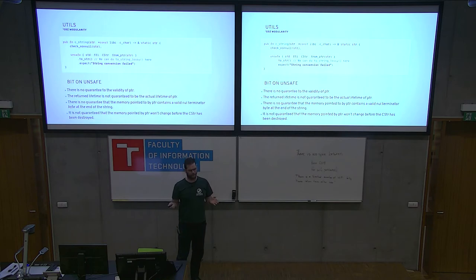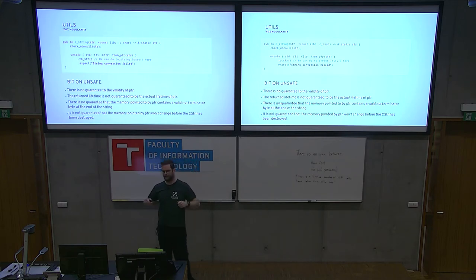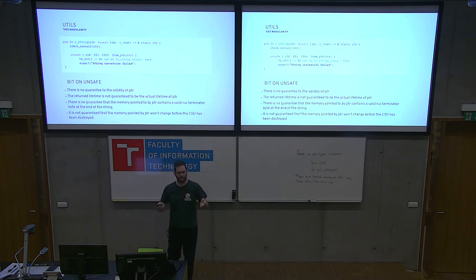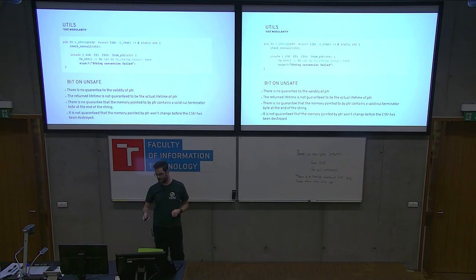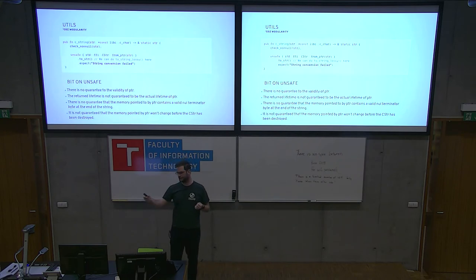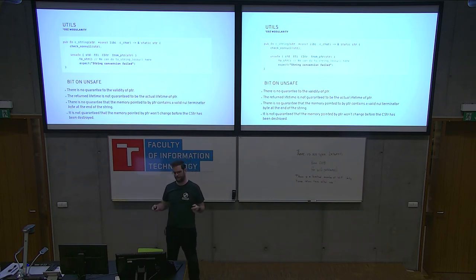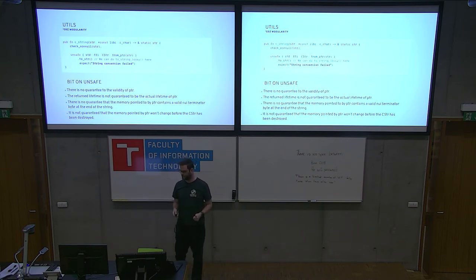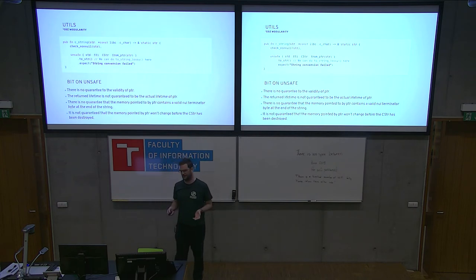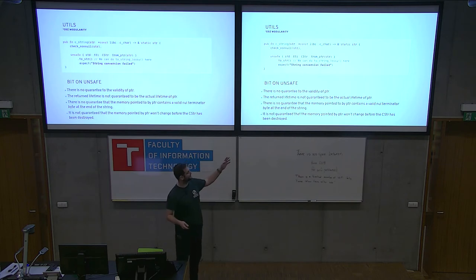You need unsafe when interfacing with another language, but what's really good is that whenever there's a reason to use unsafe, there's a list of things the compiler cannot do for you that you need to make sure of. For CStr::from_ptr: there's no guarantee of the validity of the pointer — well, we assume someone gave us a valid pointer since it's our code. The return lifetime is not guaranteed to match the actual lifetime of the pointer — we don't care because the function doesn't store it anywhere. There's no guarantee the memory contains a valid null-terminated byte — it's a C string, it does have that, we're passing it from C. And it's not being stored anywhere, we just use it.